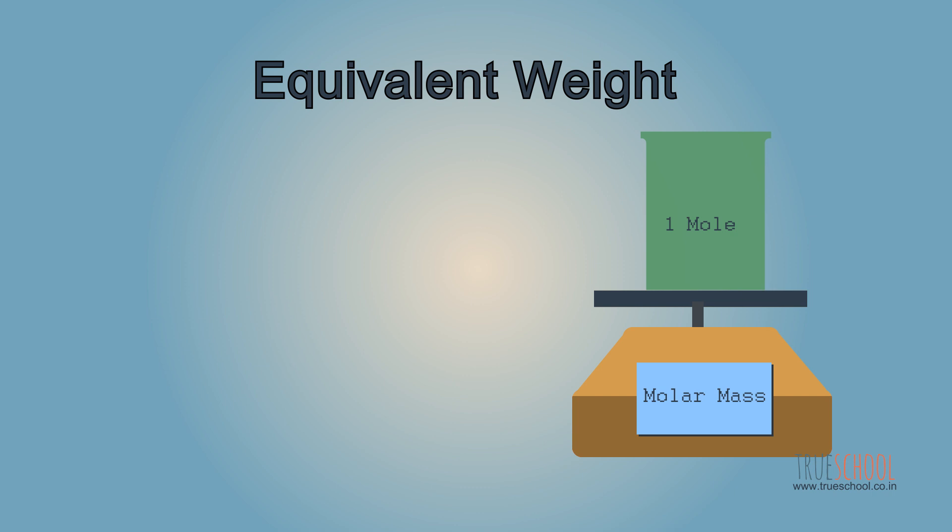1 mole of substance weighs 1 molar mass and it contains n factor into 1 equivalent of the substance. Now this n equivalent of substance weighs 1 molar mass. We want to find weight of 1 equivalent, so that will be molar mass divided by n factor. This is the expression for finding equivalent weight of a substance.